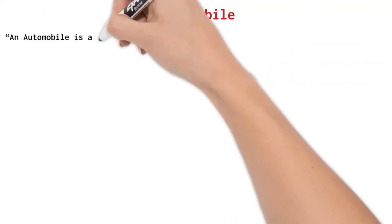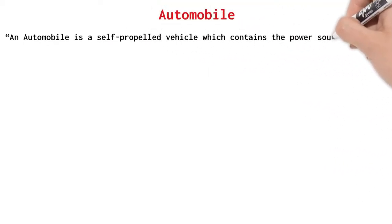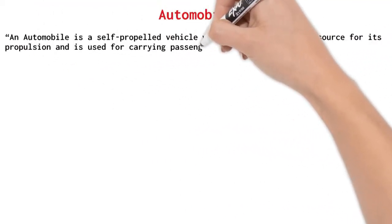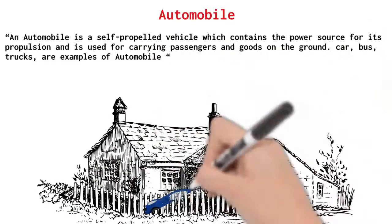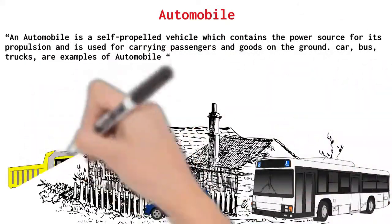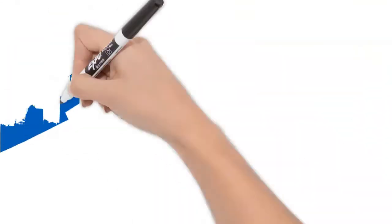Before starting this video, let us understand what an automobile is. An automobile is a self-propelled vehicle which contains the power source for its propulsion and is used for carrying passengers and goods on the ground. Car, bus, trucks are examples of automobile.